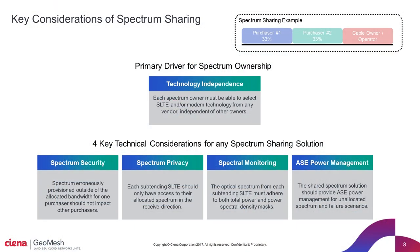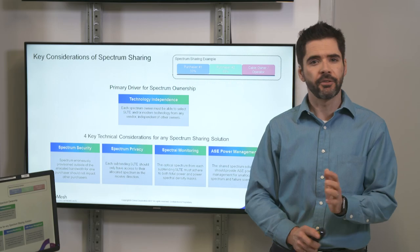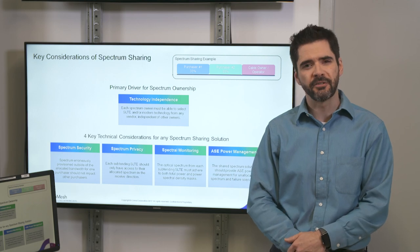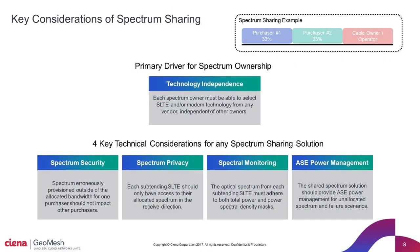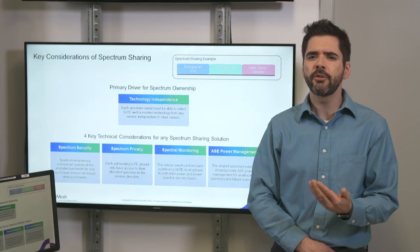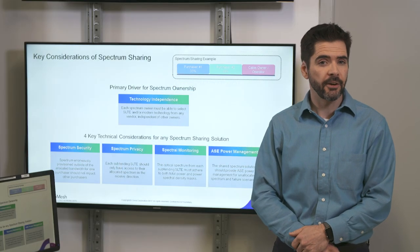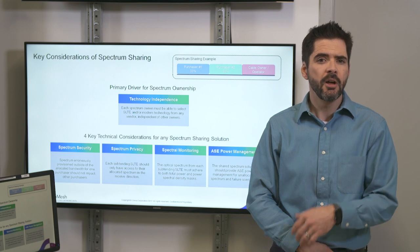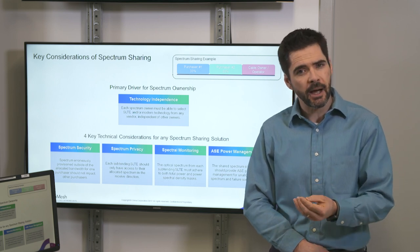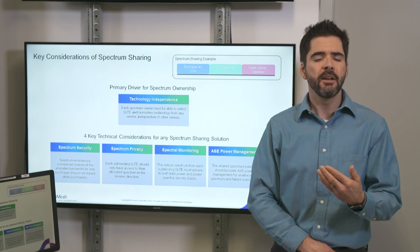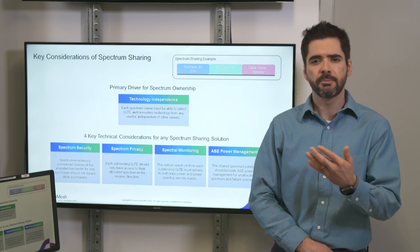Next we have spectrum privacy. A spectrum sharing solution must be built such that each subtending SLTE only has access to their allocated spectrum — a simple broadband splitter is not sufficient here. The third pillar is called spectral monitoring. We believe it is important to not only monitor optical power levels within a spectrum sharing solution, but to also monitor the spectral content. This allows the solution to work with both total power and spectral density masks to maintain independent optical performance for each spectral customer.